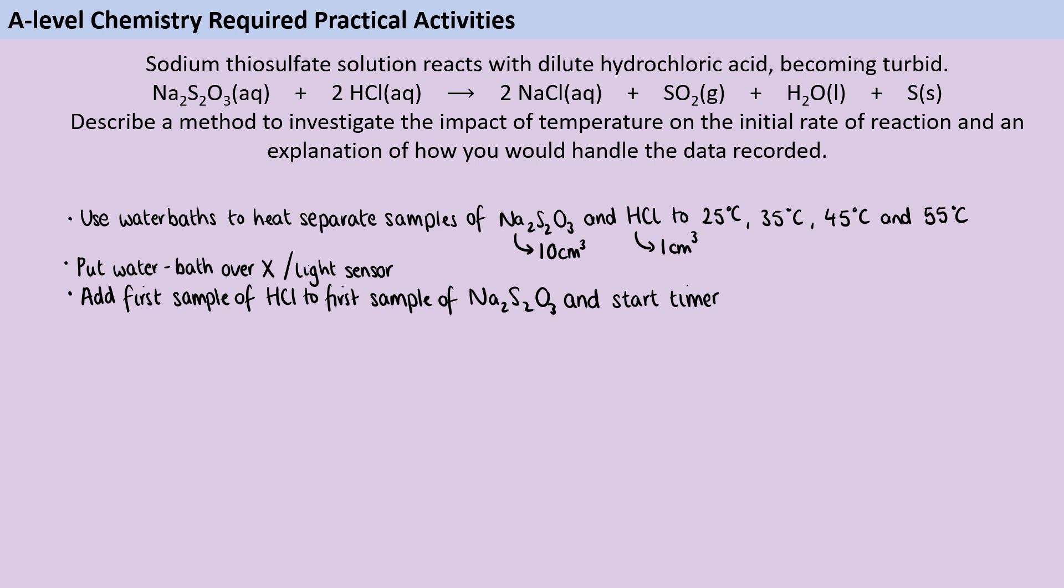So then we're going to wait until either the cross has disappeared if we're going for the low-tech method or if you're using a colorimeter then you're waiting for a predetermined point where you've set the absorbance to a certain amount or the transmission to a certain amount, and whichever one of those you're doing you're going to record how long it took for that reaction to be completed.